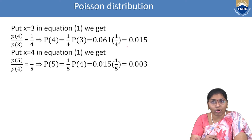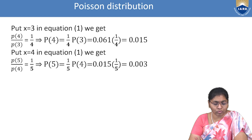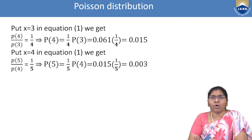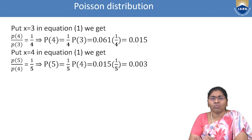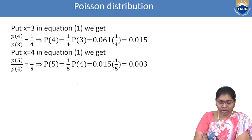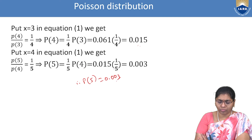Putting x = 4: P(5)/P(4) = 1/5, so P(5) = 0.015/5 = 0.003. Thus P(0)=0.367, P(1)=0.367, P(2)=0.18, P(3)=0.061, P(4)=0.015, P(5)=0.003.